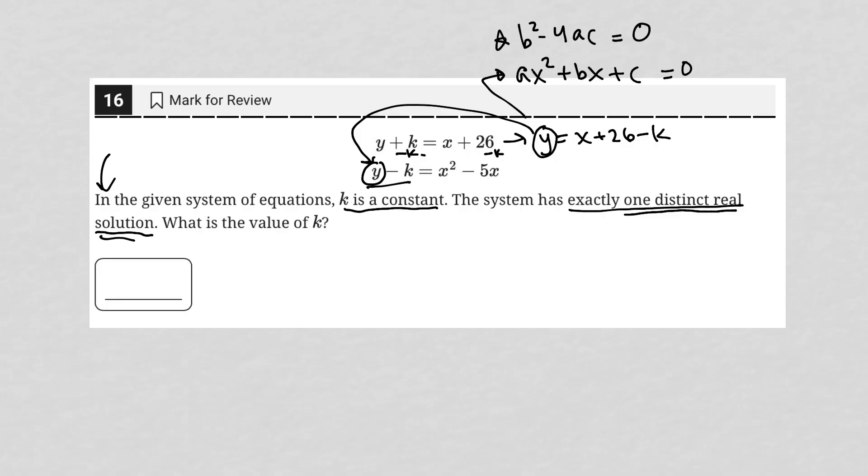So instead of y minus k here, instead it'll say x plus 26 minus k, just replacing y value with what it is from the first equation. Then I'd have minus k equals x squared minus 5x.